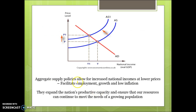Aggregate supply policies try to boost national incomes by allowing for increased productive capacity, which allows for increased GDP on the x-axis at higher prices on the y-axis. That should allow for increased employment, because we're more internationally competitive, as well as low inflation and increased growth.